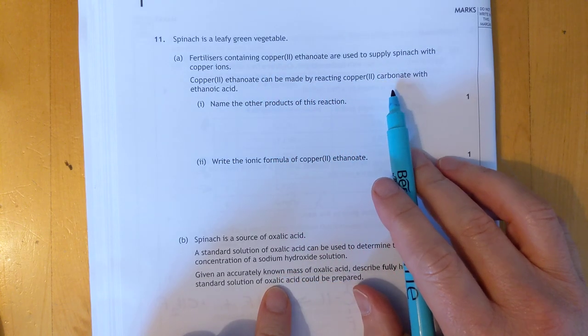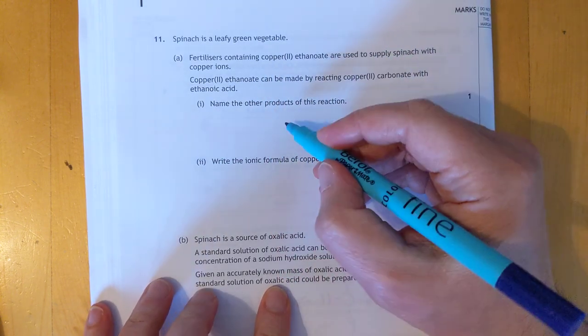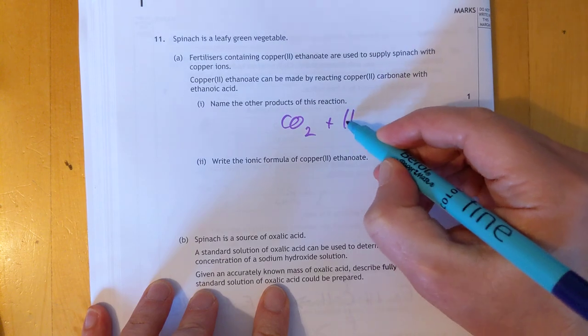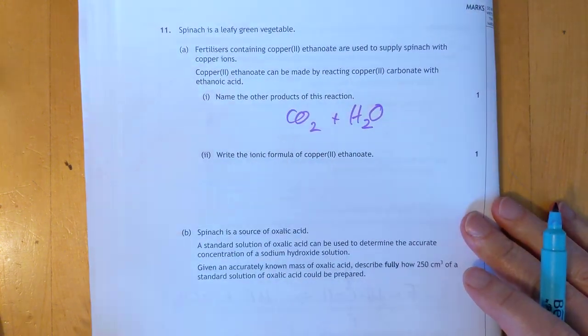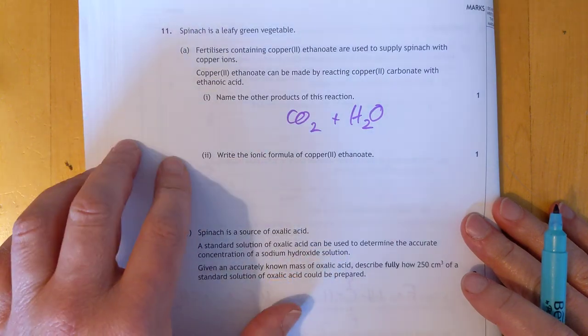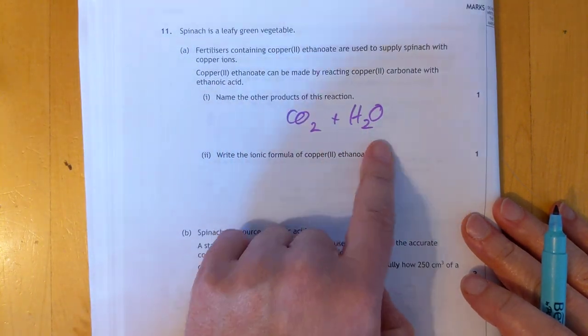Copper ethanoate is made by reacting copper carbonate with ethanoic acid. You'll make carbon dioxide and water. That's quite a nasty question because that's almost like National 5 stuff. We haven't done that in a long time. Where metal carbonate makes salt and CO2 and water.